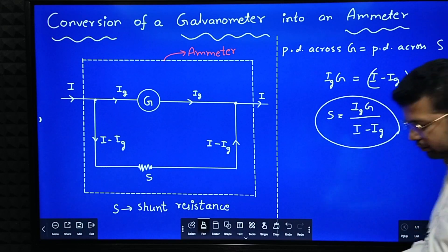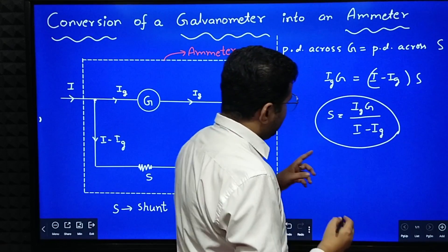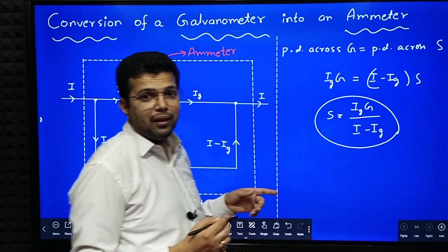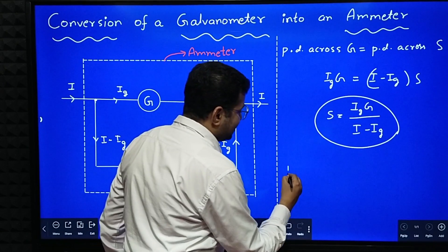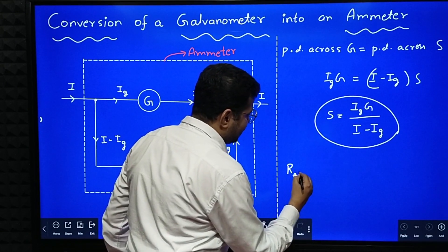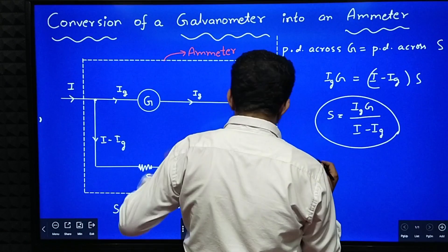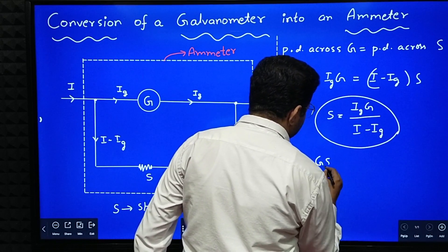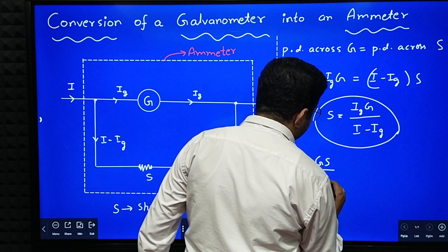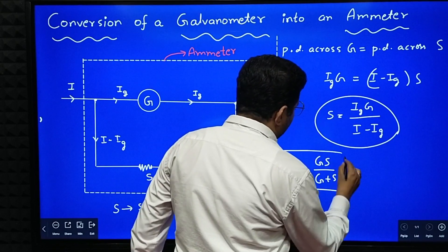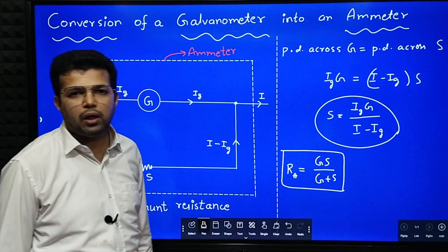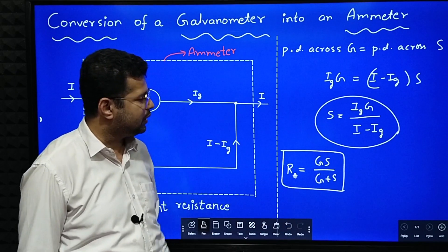Now, what is the resistance of the ammeter? Since S and G are connected in parallel, resistance of the ammeter is equal to GS divided by G plus S. Because we know when two resistors are connected in parallel, Rp is equal to R1 R2 divided by R1 plus R2.